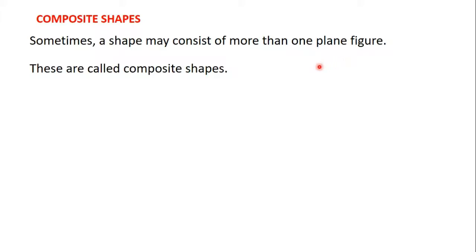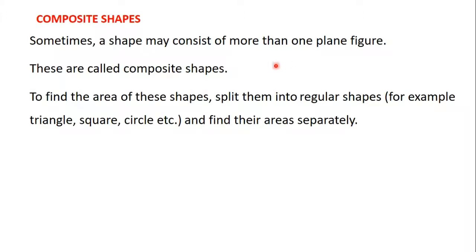Sometimes we may be given a shape that contains more than one of these plane figures. For example, you can have a triangle on a rectangle, or a triangle in a circle — these shapes are called composite shapes. To find the area of these shapes, you split them into regular shapes like triangles, squares, or circles, then you find their areas separately.